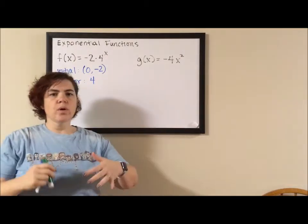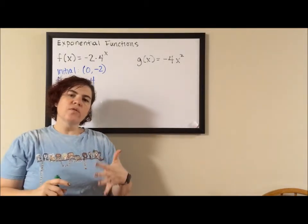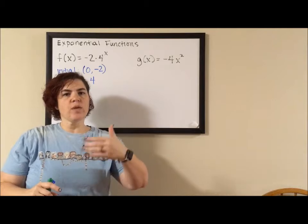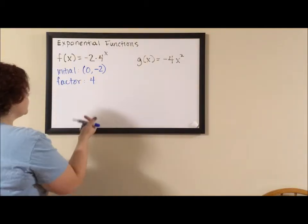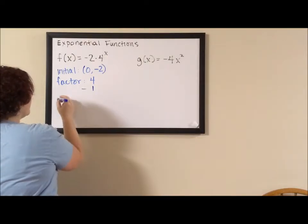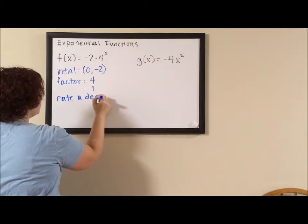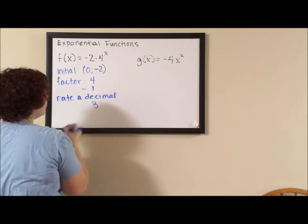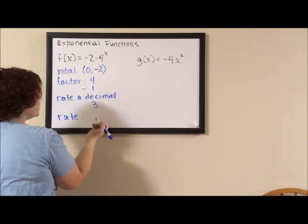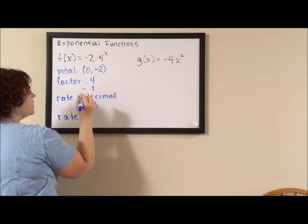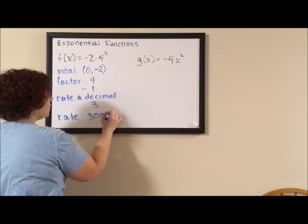If we need to figure out the percent growth, we take this factor and subtract 1. The rate as a decimal is 3. To get the actual rate, because rates are usually percentages, we multiply by 100. So this function is growing 300 percent.